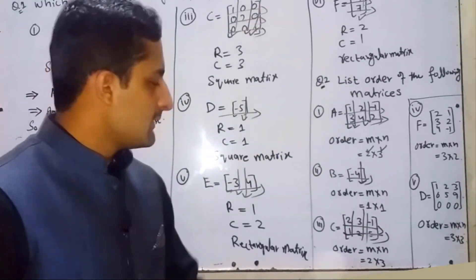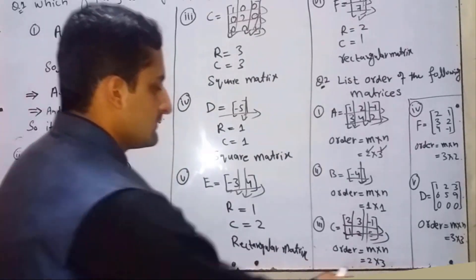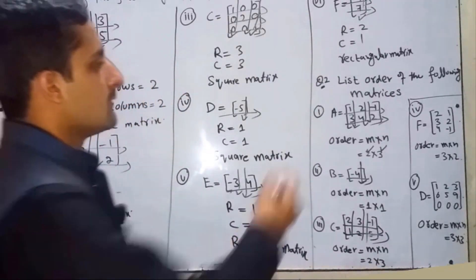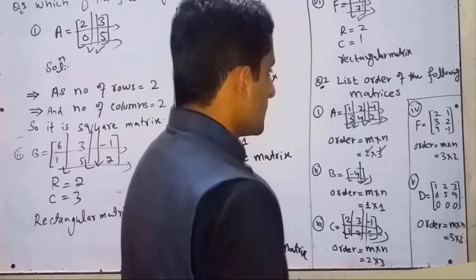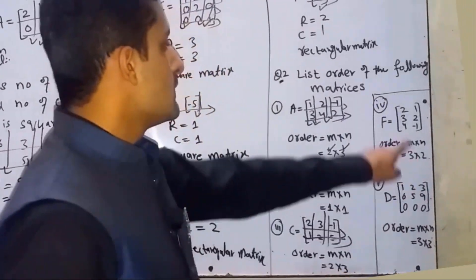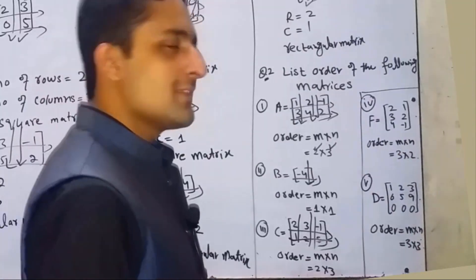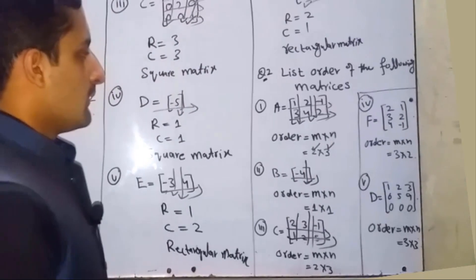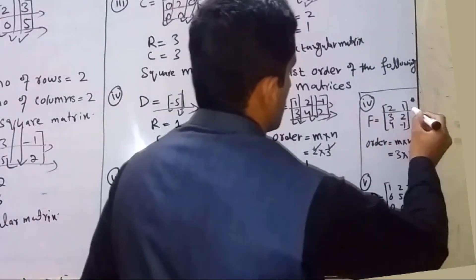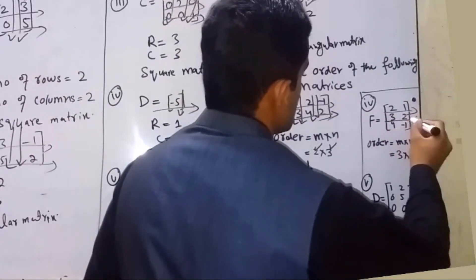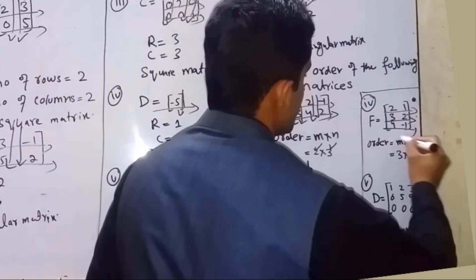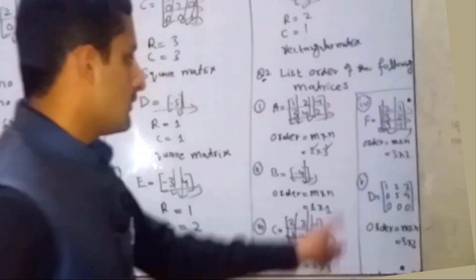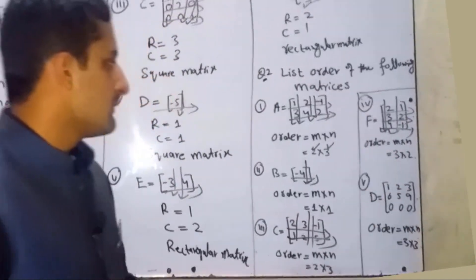Part f: F = [[2,1],[3,2],[4,-1]]. Number of rows = 3, number of columns = 2. Order equals m×n, so order is 3×2.